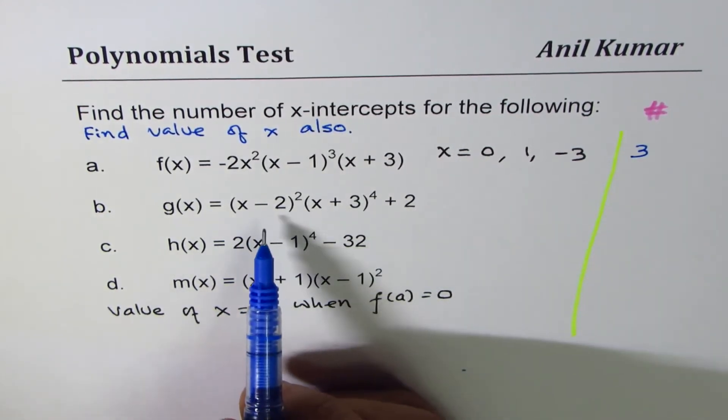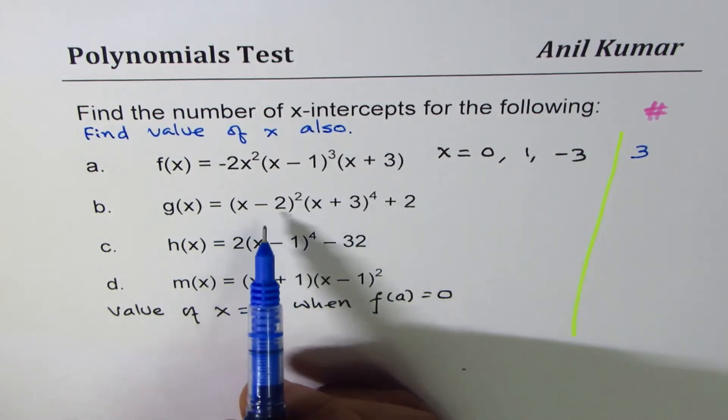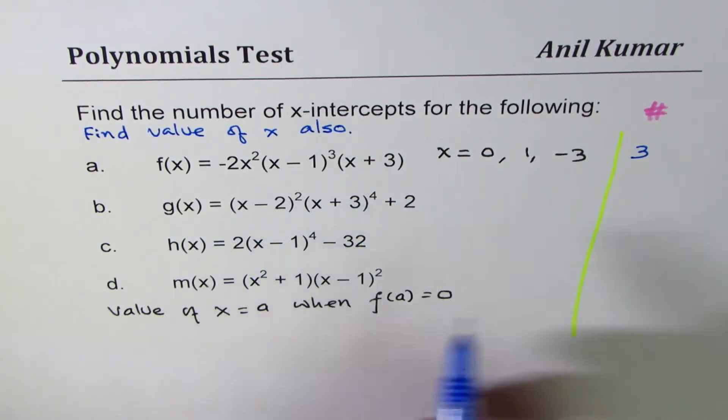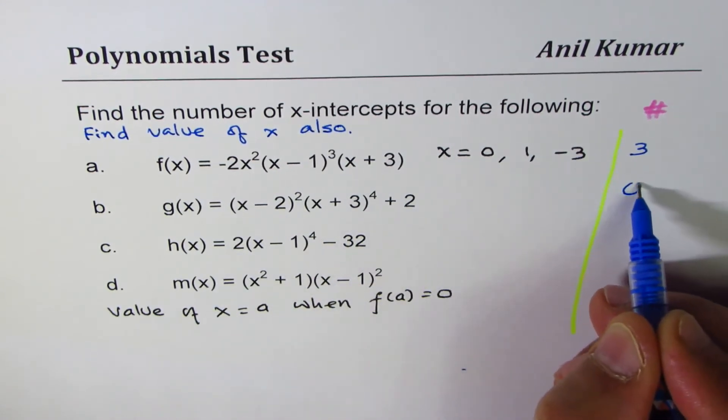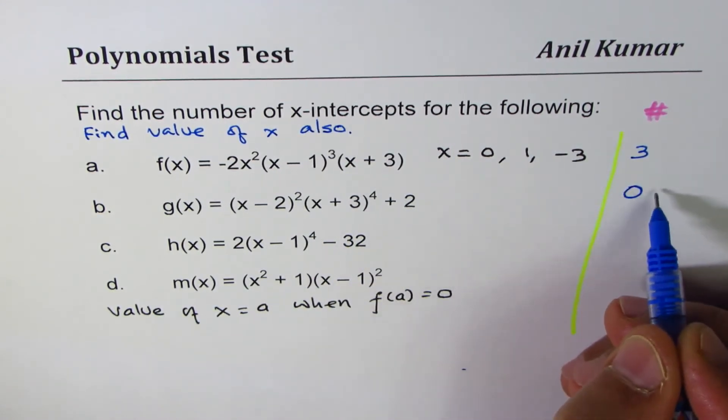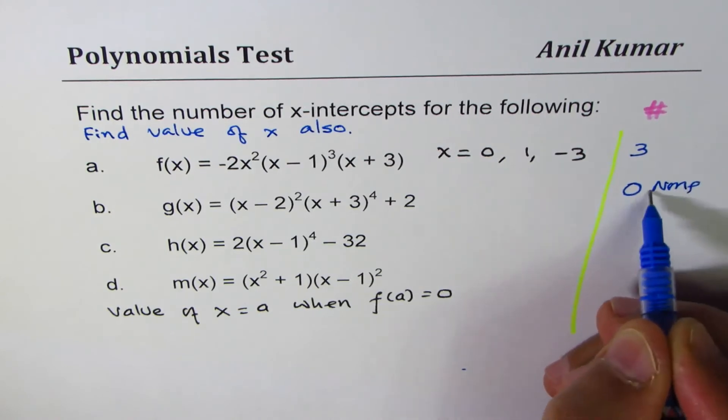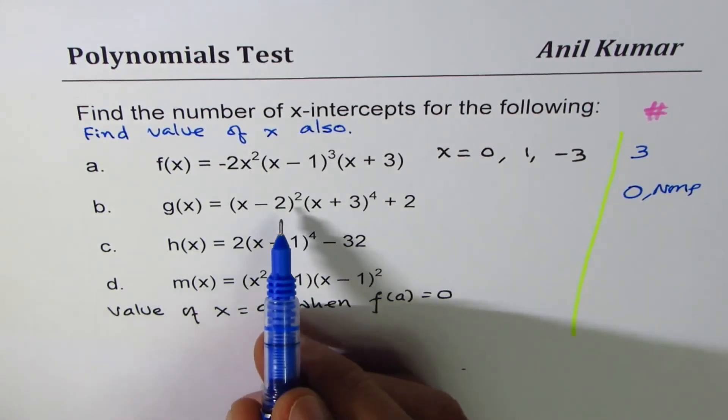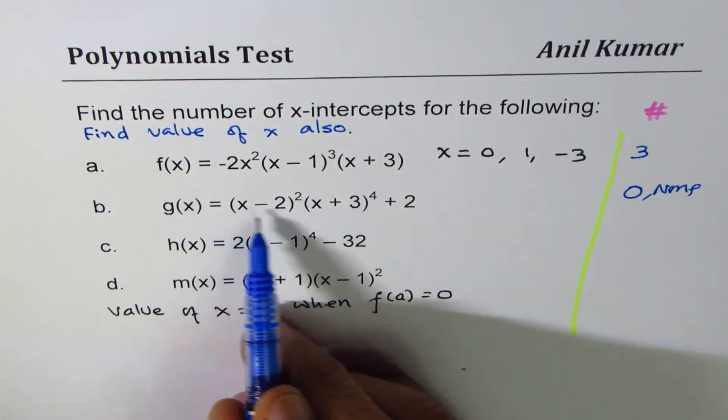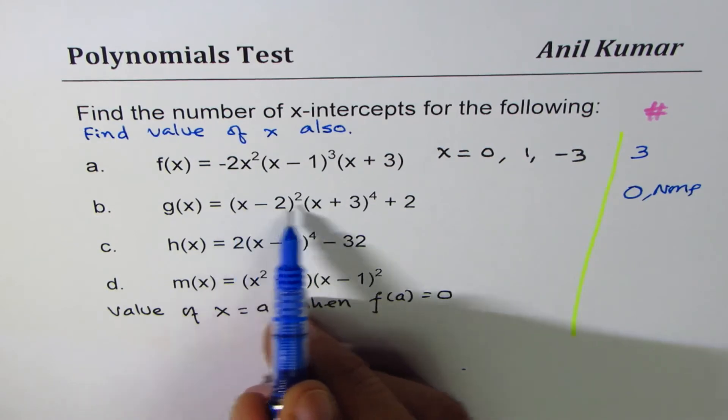The second one here is kind of tricky. (x - 2)² + (x + 3)⁴ + 2, both are even plus 2, so this is never 0. Do you see that? So here the number is 0 or none. Never 0, because every time you put anything here, even at 2, the minimum value is 2. So absolute minimum is 2.